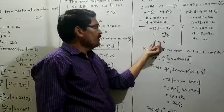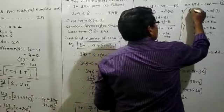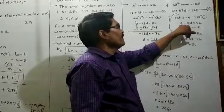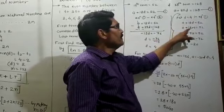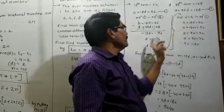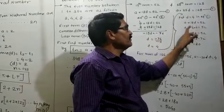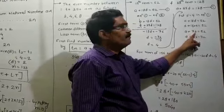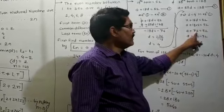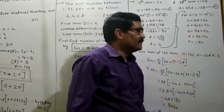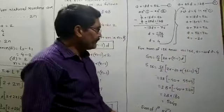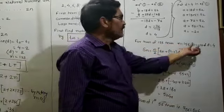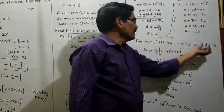Now put D equals 4 into equation 1: A plus 18D equals 52. So A plus 18 multiplied by 4 equals 52, giving A plus 72 equals 52. Transposing, A equals 52 minus 72 equals minus 20. For the sum of the first 56 terms, N equals 56, A equals minus 20, and D equals 4.